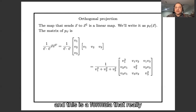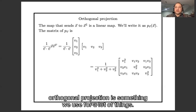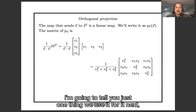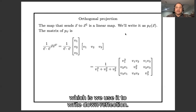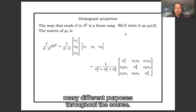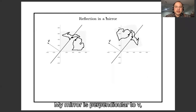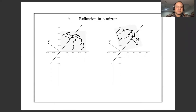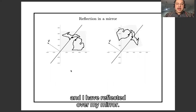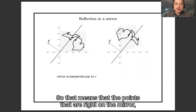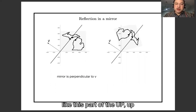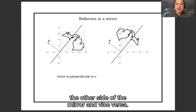This is a formula that's really going to come up a lot — orthogonal projection is something we use for many things. I'm going to tell you just one thing we use it for next, which is to write down reflection. Here's the vector V, here's the mirror, which is perpendicular to V. I have reflected over the mirror, so points right on the mirror get sent to themselves, but points on one side get sent to the other side.